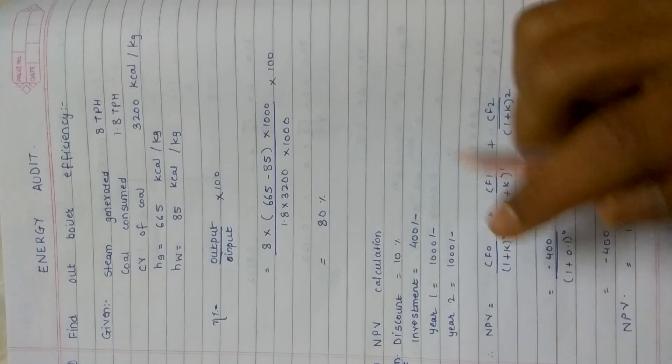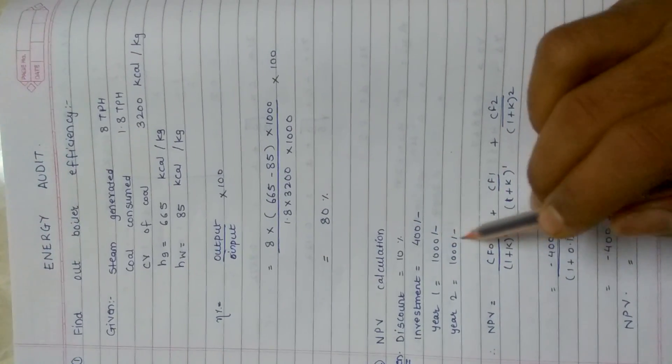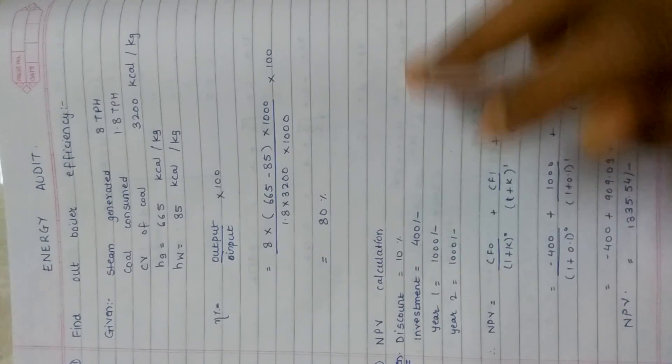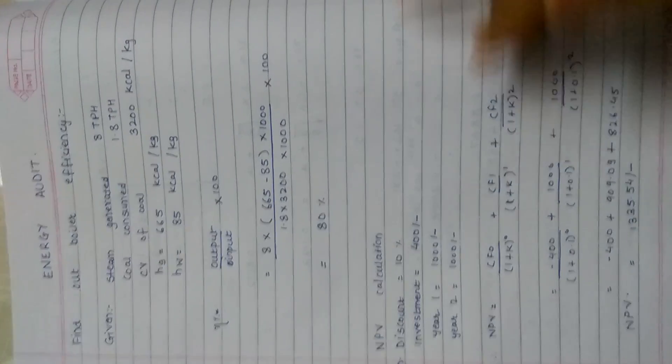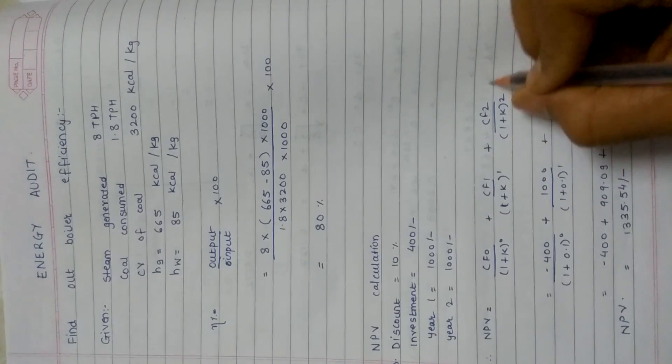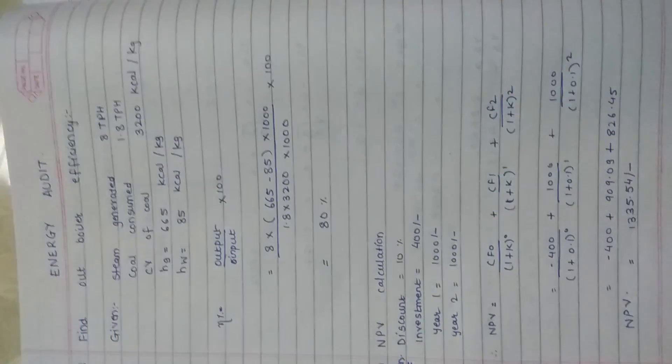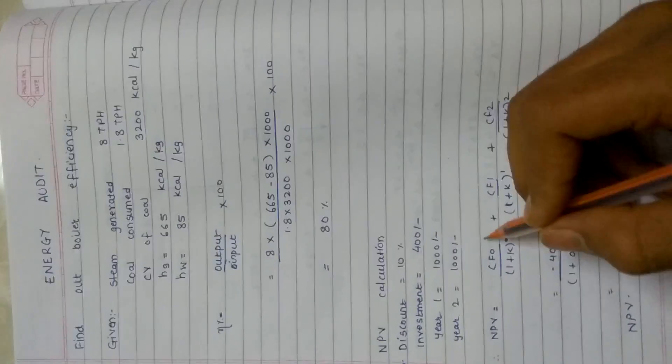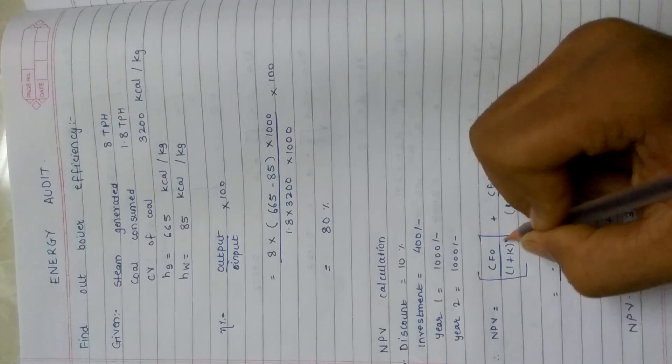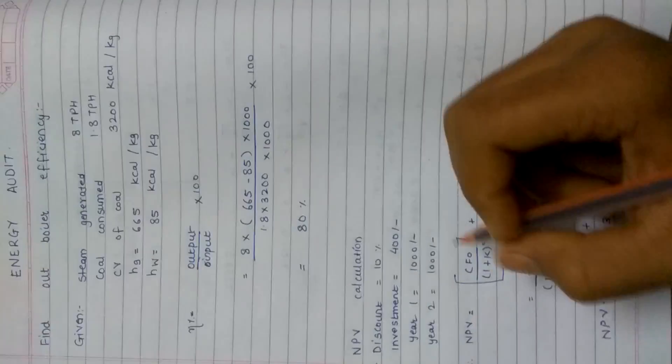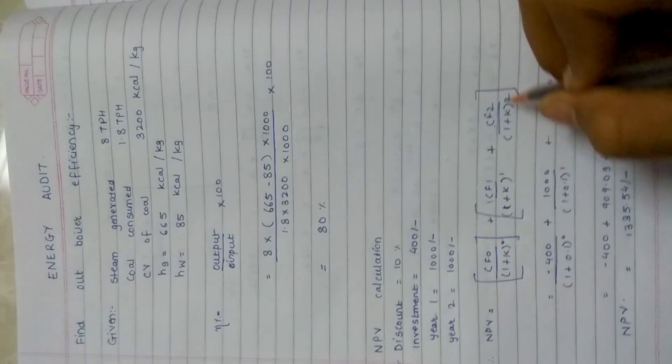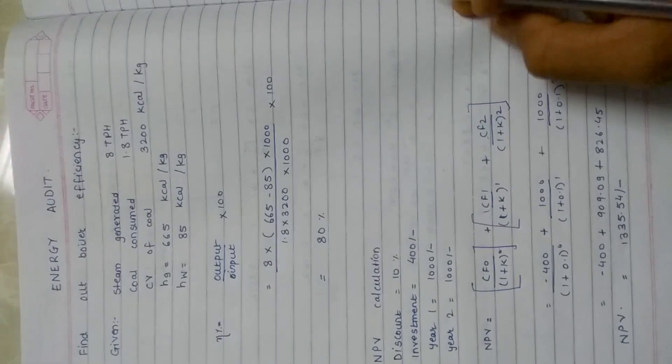We have three terms: investment and 2 years. If we were given n number of years, we would consider n number of years and n would go on increasing 1, 2, 3, and cf1, cf2, cf3 will be increasing as per the given data. The first term, cf0 upon (1 plus k) raise to 0, is the investment and these two are the returns from the particular investment.